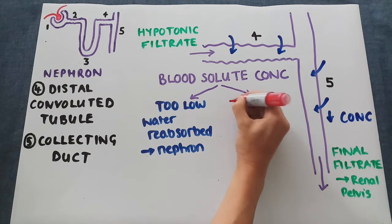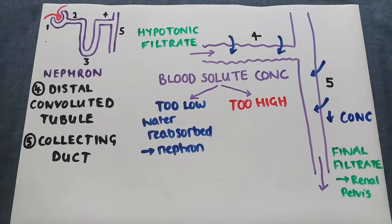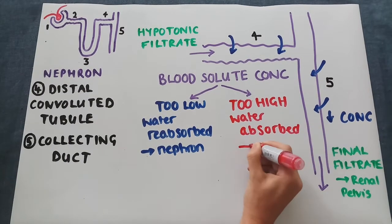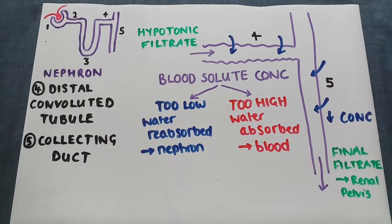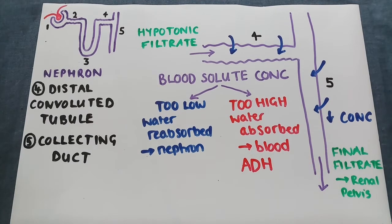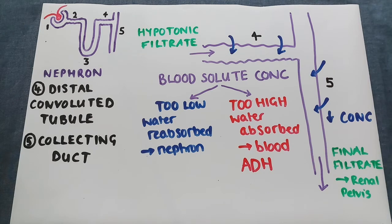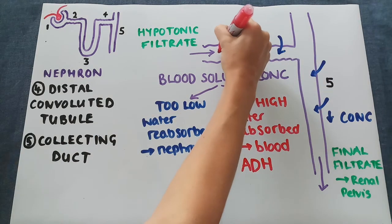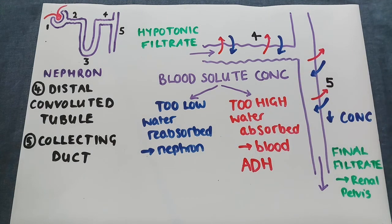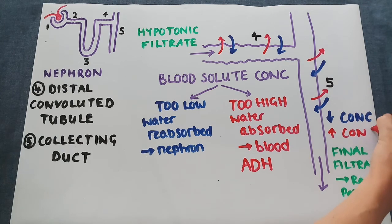The opposite scenario: if your blood solute concentration is too high and doesn't have enough water in it, water is then absorbed into your blood. This is controlled by a hormone secreted by the pituitary gland called anti-diuretic hormone, also known as ADH. ADH makes the walls of the distal convoluted tubule and the collecting duct more permeable, allowing water to move out into your blood. This decreases the solute concentration of your blood while increasing the concentration of the final filtrate, so a more concentrated urine is produced.